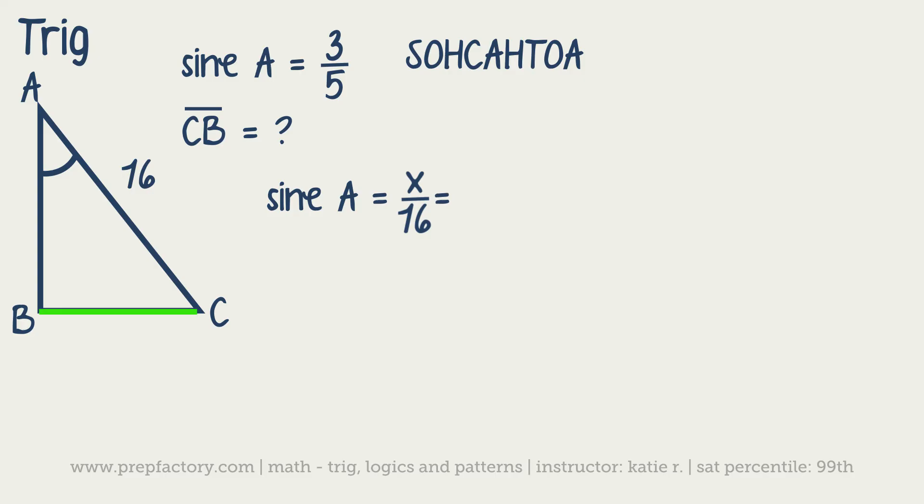We can go ahead and put that in. Then all we're doing is cross-multiplying. If we're cross-multiplying, we would get 5 times x is equal to 3 times 16. And then once we write that out, we're dividing by 5.